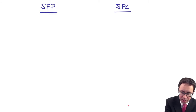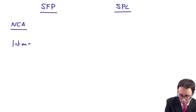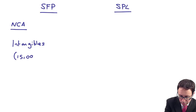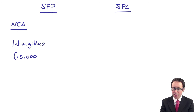So within the statement of financial position, on my non-current assets, under intangibles, they will be there — $15,000. Again, we're working in round thousands.